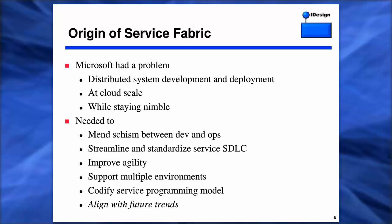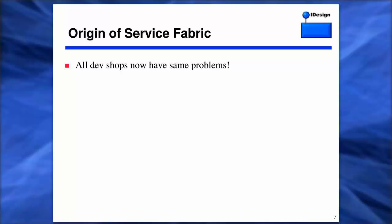Let's get into the origin of the fabric. Microsoft had a problem: how to stay nimble while developing and deploying at cloud scale these modern distributed systems. There are numerous concerns surrounding that — how to codify the service programming model, how to improve agility across the whole entire pipeline, how to streamline the SDLC, and most importantly, their need for mending the schism between what the developers are building and the operational capabilities for actually deploying that software. They also wanted this platform to align with future trends. The key thing here is that their problems are now all of our problems — all of you are experiencing these same concerns.